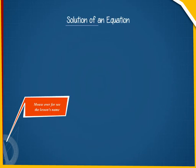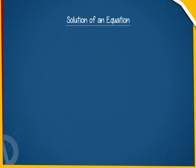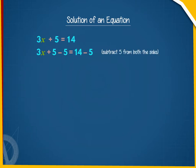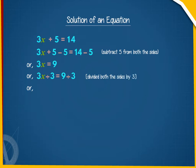Solution of an Equation. Let us consider an equation: 3x + 5 = 14. Subtracting 5 from both sides gives 3x + 5 - 5 = 14 - 5, or 3x = 9. Dividing both sides by 3 gives 3x / 3 = 9 / 3, or x = 3. So the value of x is 3.